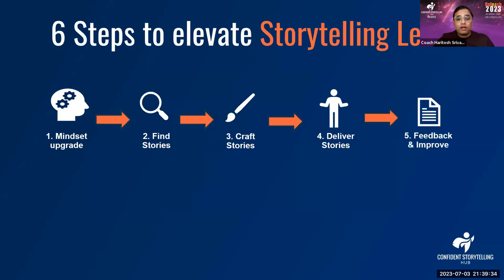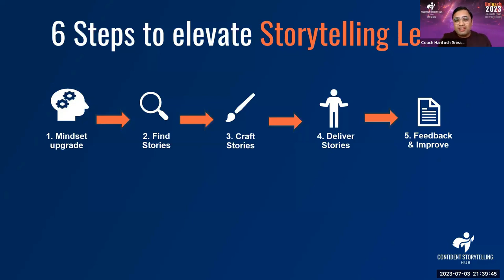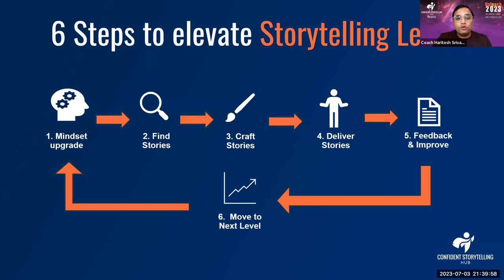The fifth and one of the most important steps is getting feedback. There are different types of feedback — one is what you get from your fellow storytellers and anyone out there, and another is what you get from your coaches. You have to give the right attention to the kind of feedback you are receiving. Once you complete all of this, you move to the next level.